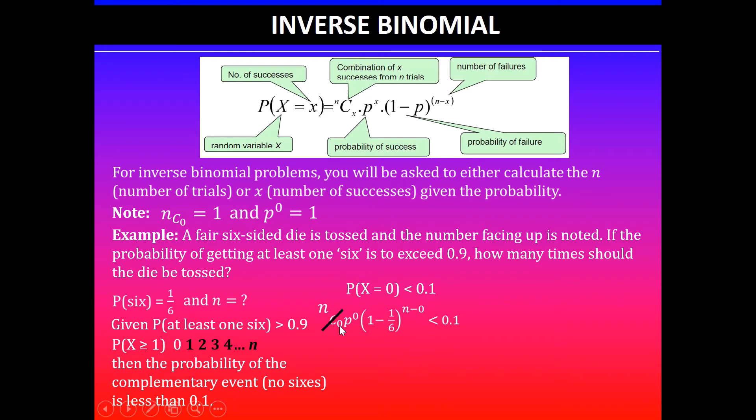We know that nC0 will become 1, so n combination 0 is always 1, anything raised to the power of 0 is also 1, and then we can simplify 1 minus 1/6. 1 minus 1/6 will simplify to 5/6, and n minus 0 here will be n.